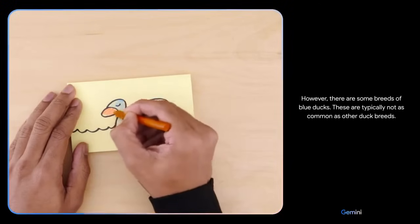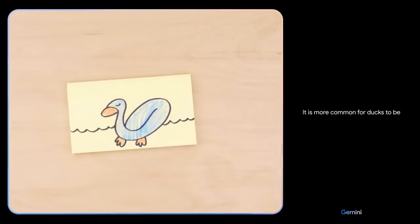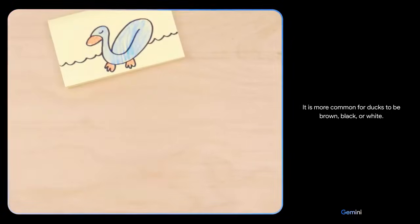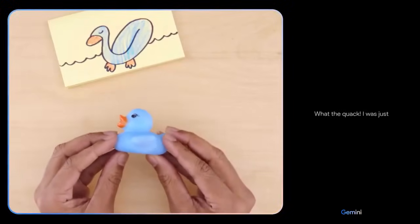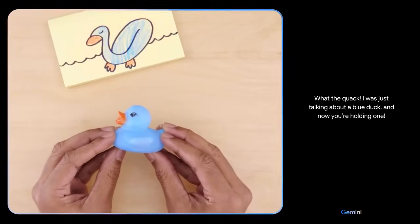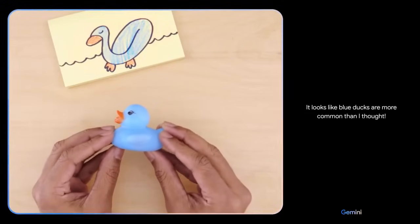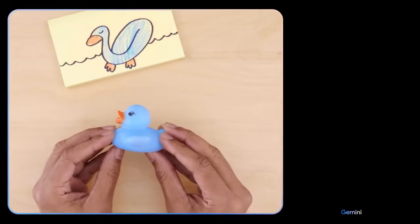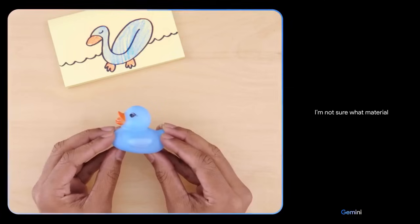This is not a common color for ducks. However, there are some breeds of blue ducks. These are typically not as common as other duck breeds. It is more common for ducks to be brown, black, or white. Are you sure? What the quack! I was just talking about a blue duck and now you're holding one. It looks like blue ducks are more common than I thought.